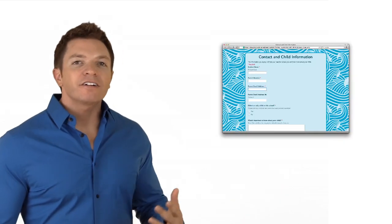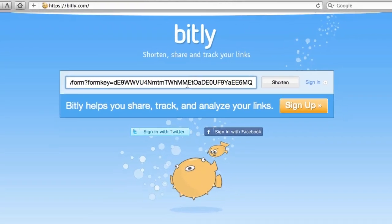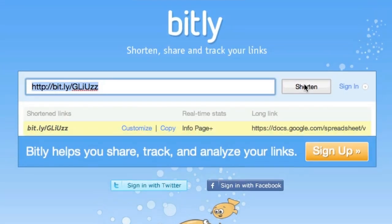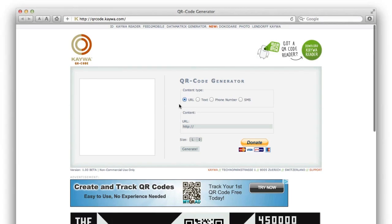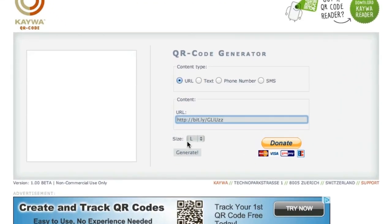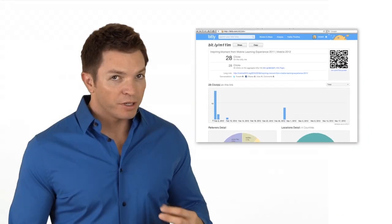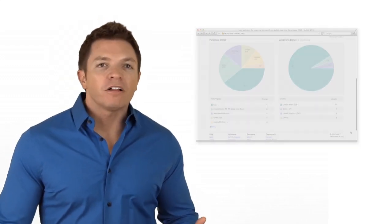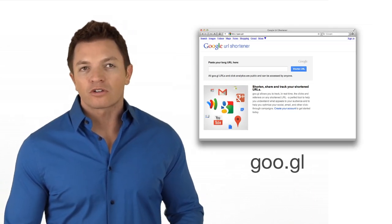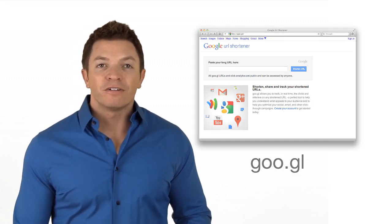For example, this is a survey teachers might give parents at curriculum night. I'll copy the link. Then I'll go to bit.ly.com and paste the link into the box. Then I'll copy the shortened link and paste that into the QR code generator. Yes, it's an extra step, but it will really make scanning your code easier and faster. Plus, if you are logged into bit.ly.com when you shorten the URL, it will keep track of how many times the URL was accessed. There are alternatives to bit.ly.com, including Google's URL shortener at goo.gl. Many of these shorteners can generate QR codes on their own, so you don't even need to copy and paste them into another generator.